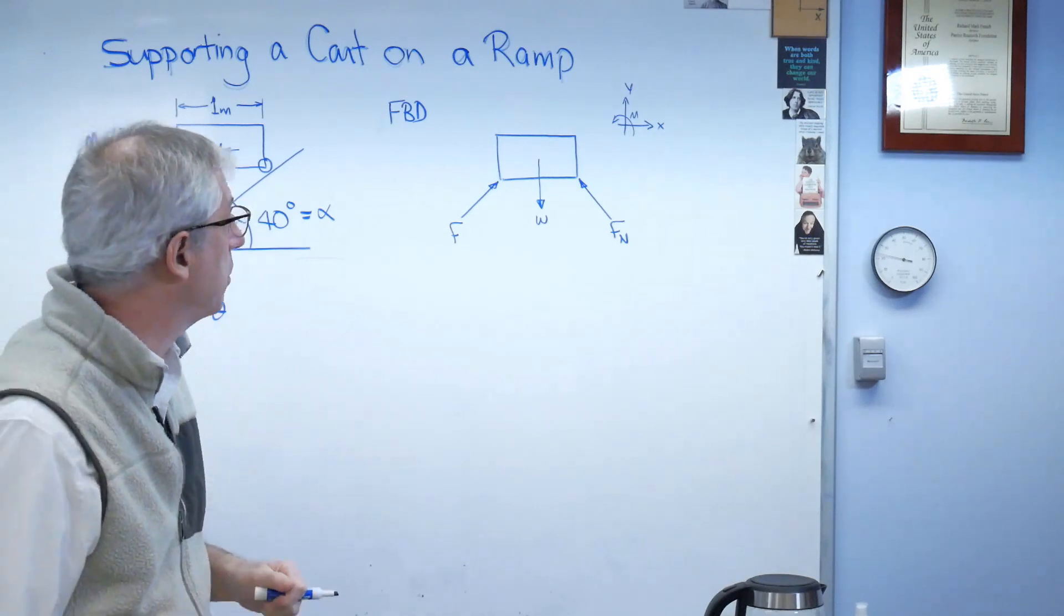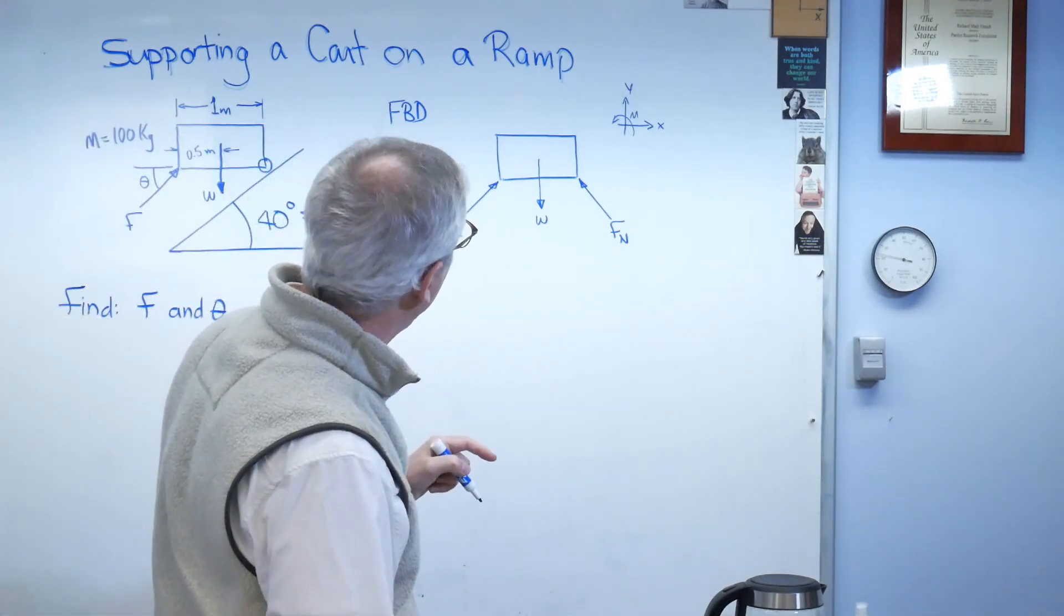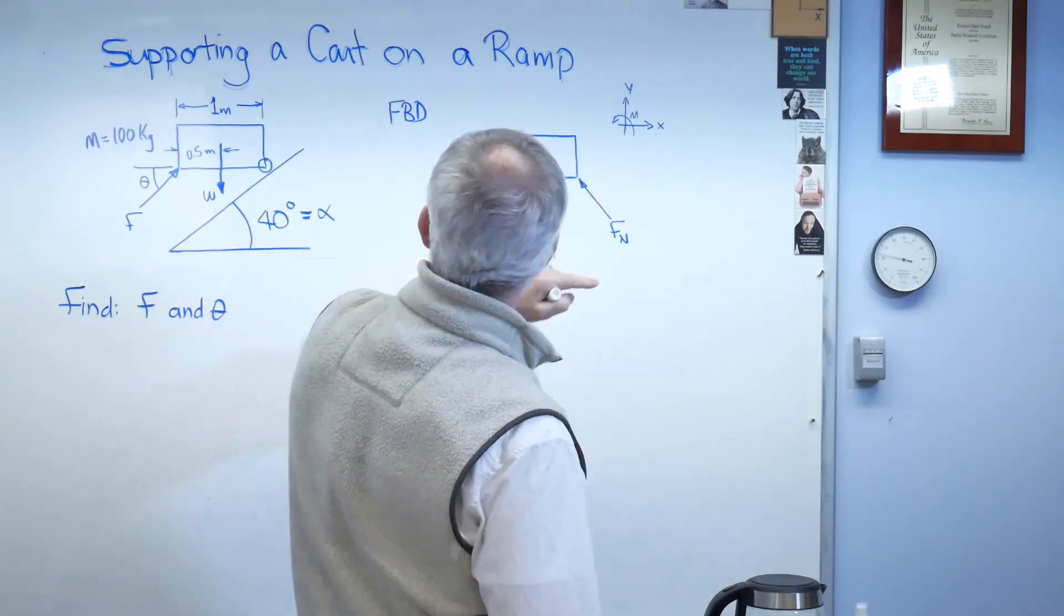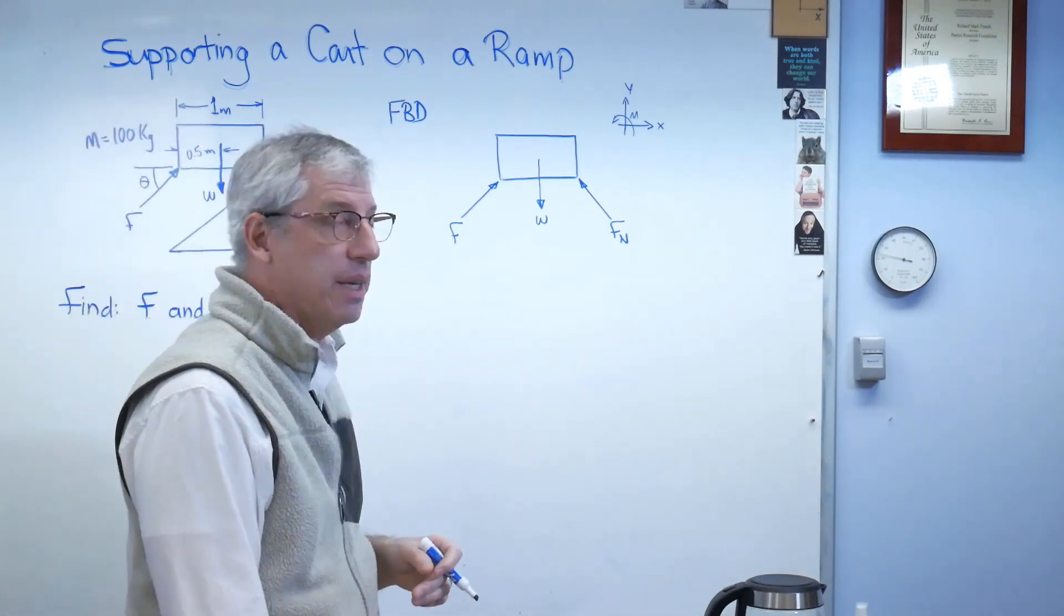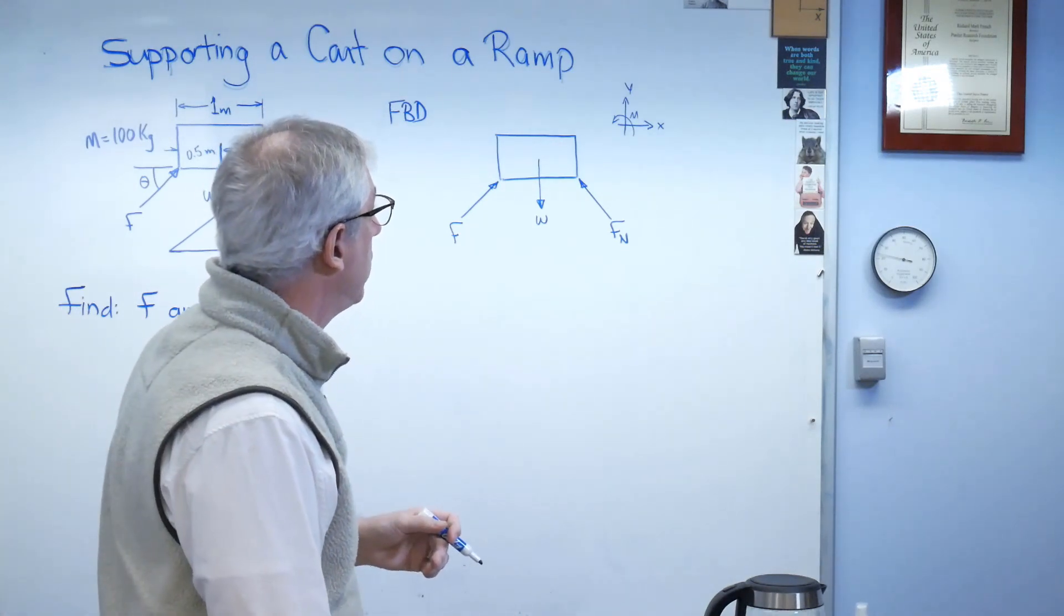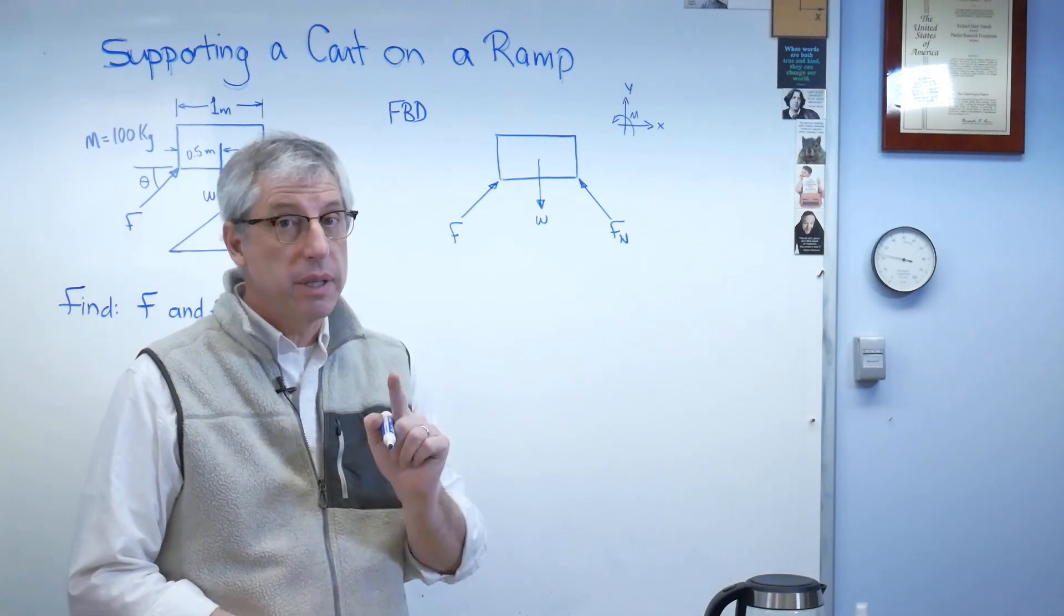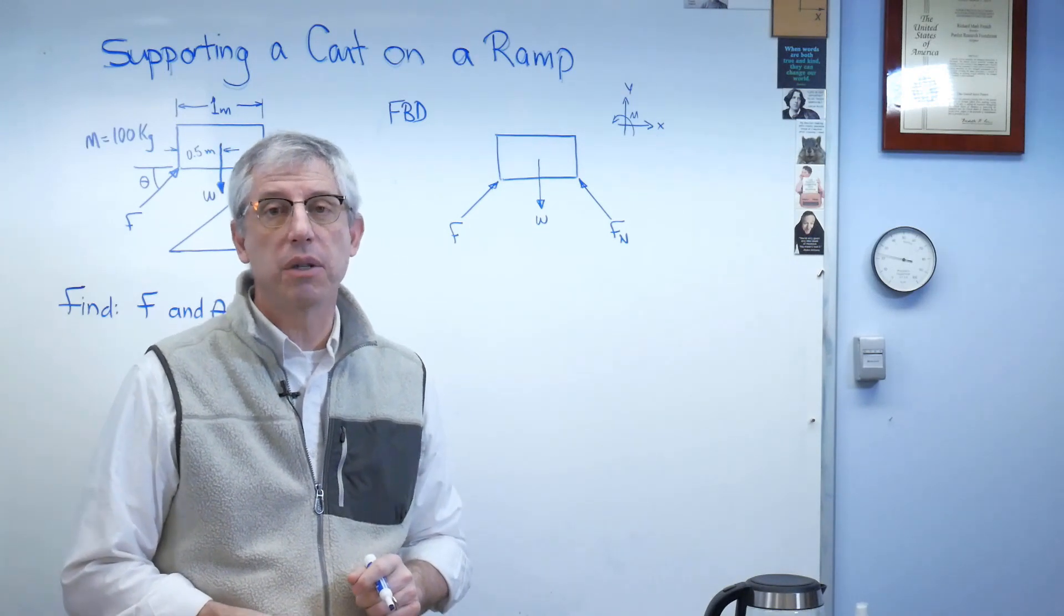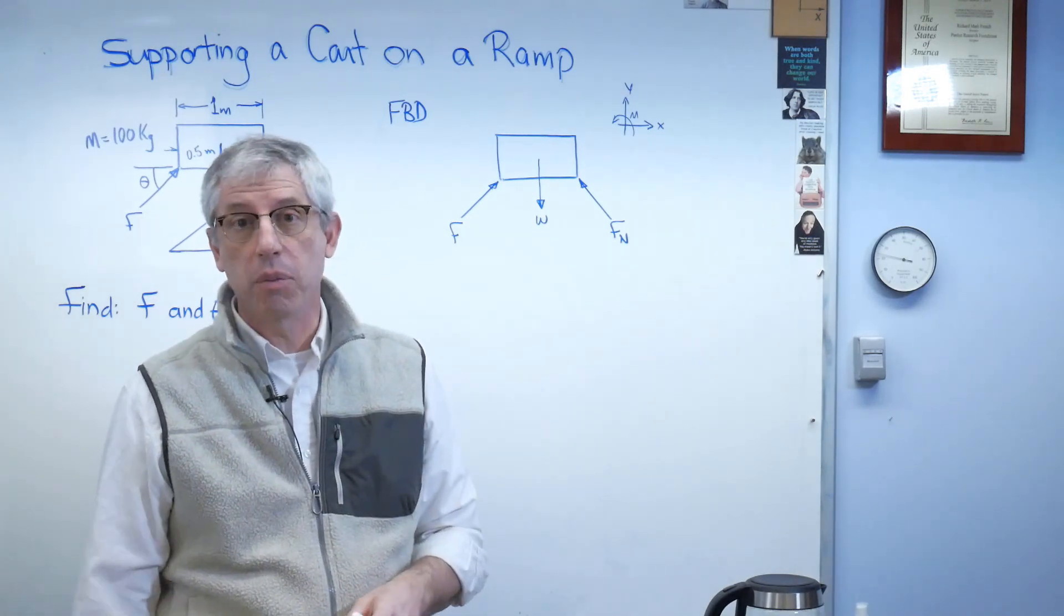Now this problem is symmetric. Wouldn't be too surprising if F and F_n were the same and that the angle from horizontal to there and horizontal there were also the same. It wouldn't be surprising. Is it true? I don't know. Let's use the math to find out. It's okay to use your intuition to try to anticipate an answer, but it's not okay to use your intuition to replace calculation. That's how you drop bridges in the water, that's how you tip cranes over. Bad things happen when you do too much of that.